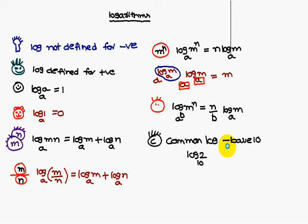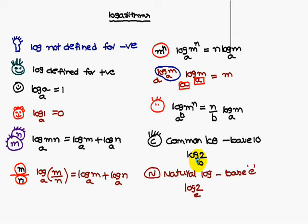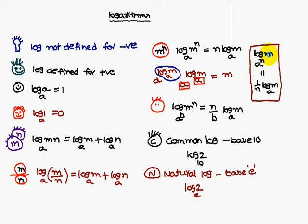What is meant by common logarithm: depending upon the base, if the base is 10, it is called a common logarithm. With base e, it is called a natural logarithm. Also, log M base a to the power N equals 1/N times log M base a.